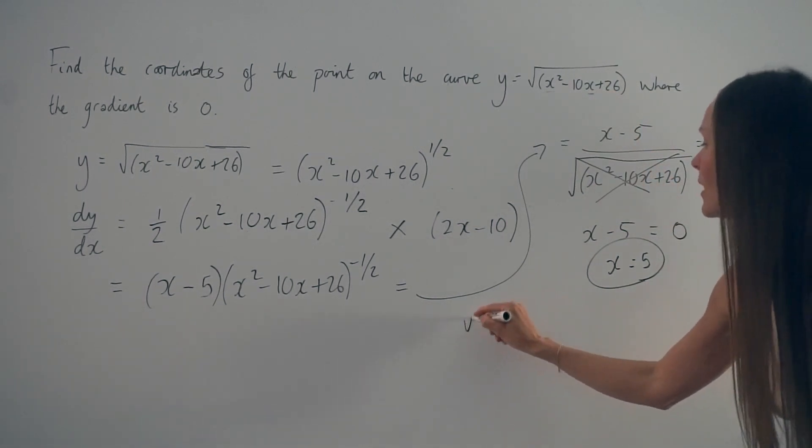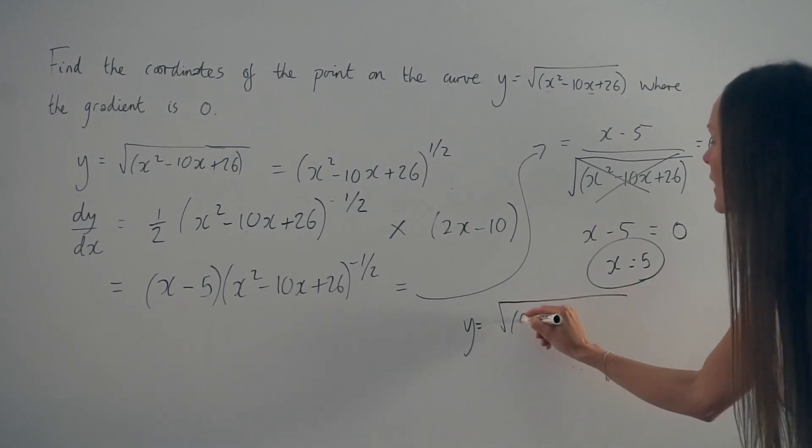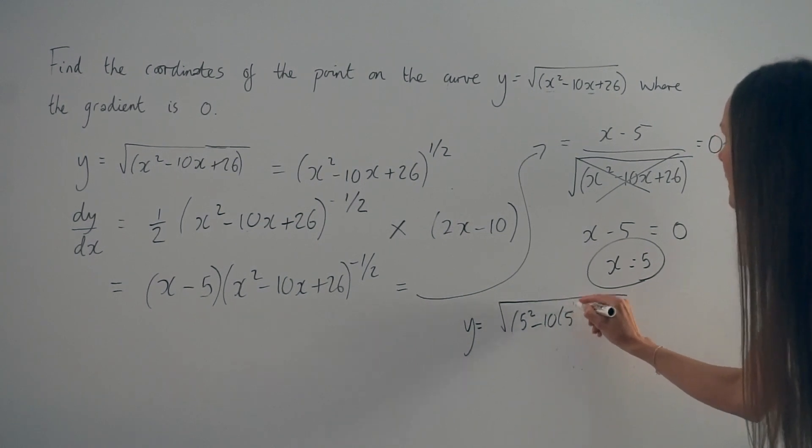So we have y equals the square root of 5 squared minus 10 lots of 5 plus 26.